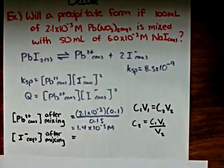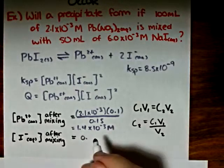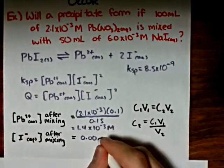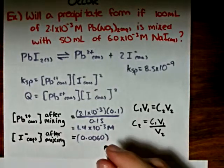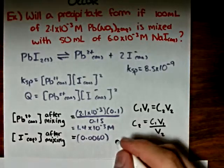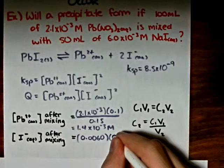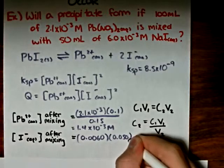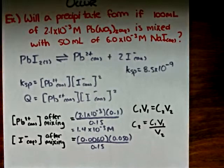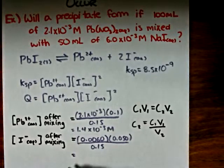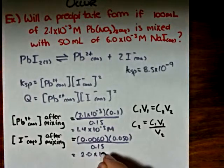We'll do the same again for the iodide ions. We had an initial concentration of 0.0060 moles per liter and an initial volume of 0.0050 liters. The final volume is 0.15 liters, giving us a final concentration of 2.0 times 10 to the negative 3 moles per liter for the iodide ions.